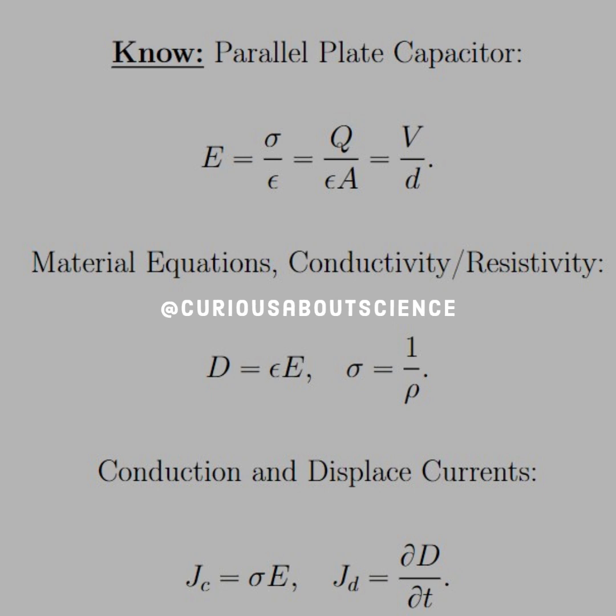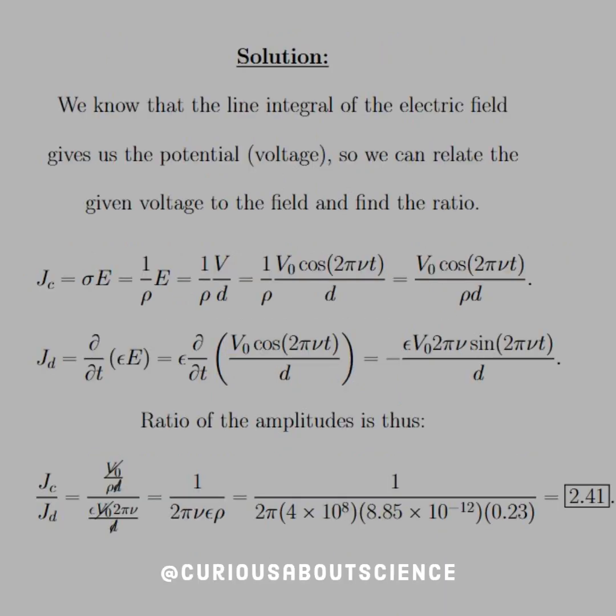All right, fair enough. Here, sigma was the conductivity, by the way. So the solution here is pretty quick. We know that the line integral of the electric field gives us the potential voltage, which I spoke on earlier, so we can relate the given voltage to the field and find a ratio.